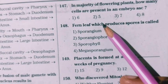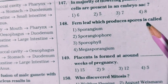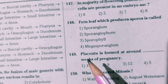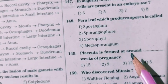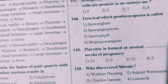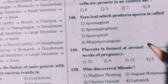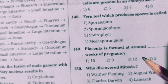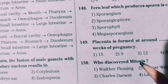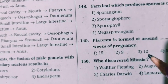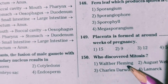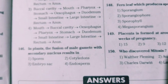Placenta is formed at around 12 weeks of pregnancy. The last question: who discovered mitosis? It is Walther Flemming. These are the biology questions of the Poly Set 2021.